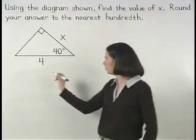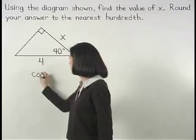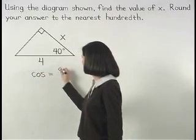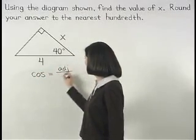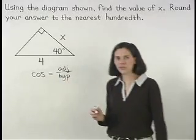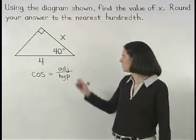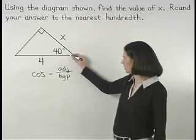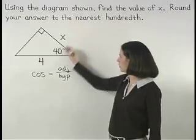And remember that cosine equals adjacent over hypotenuse, so we can set up the equation cosine of 40 degrees equals x over 4.